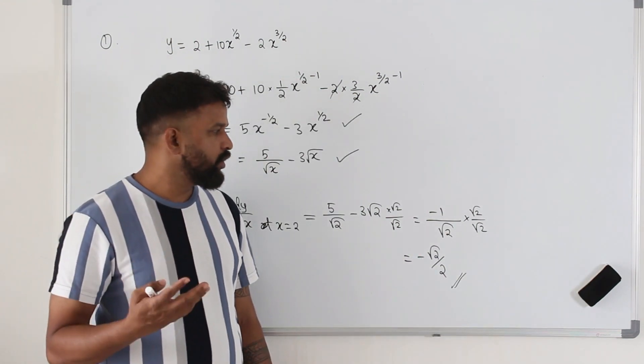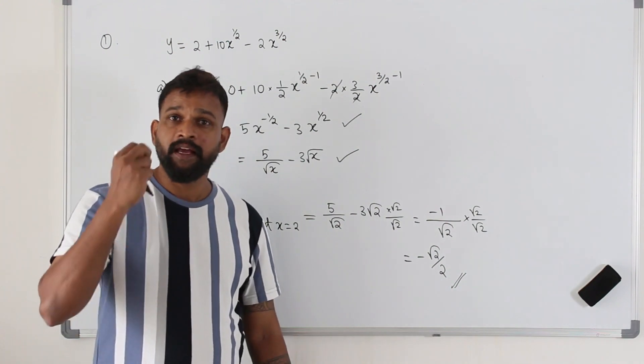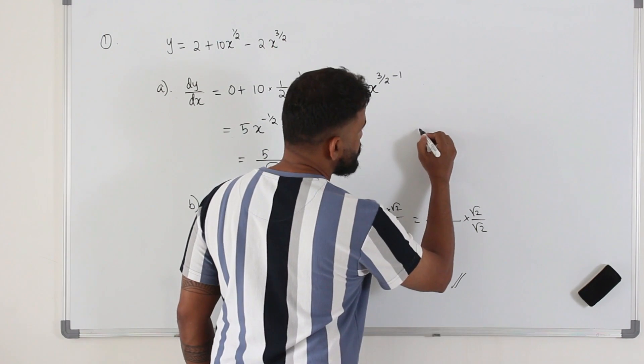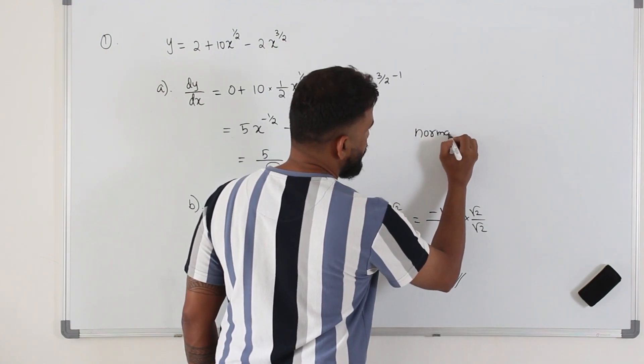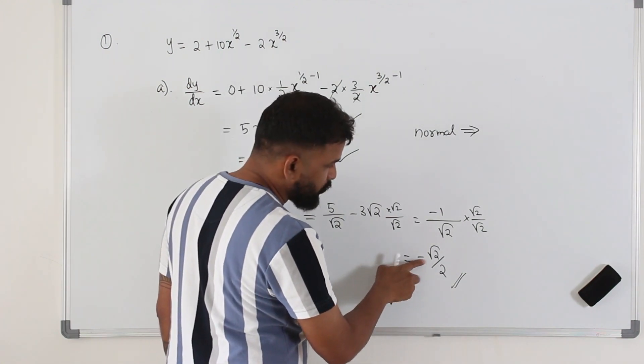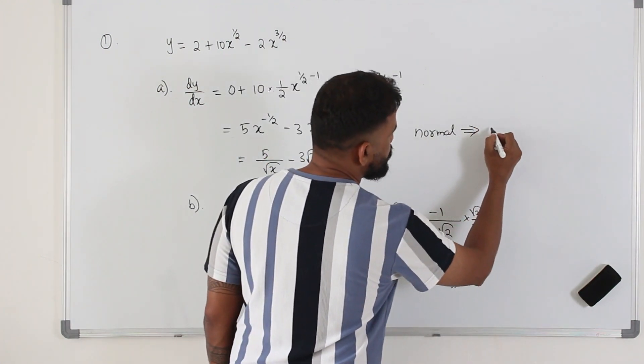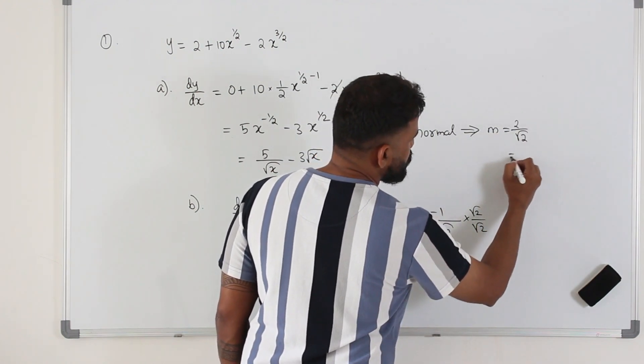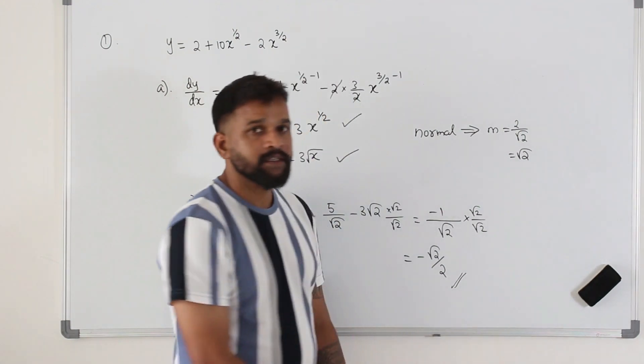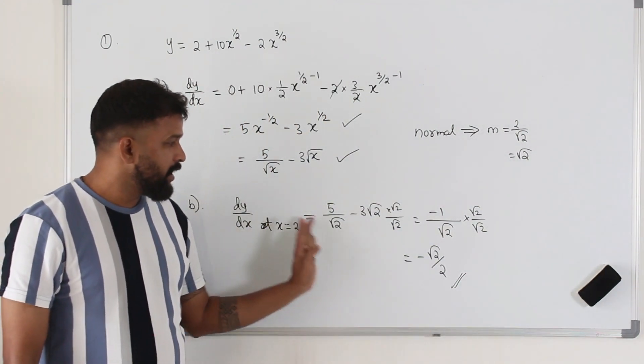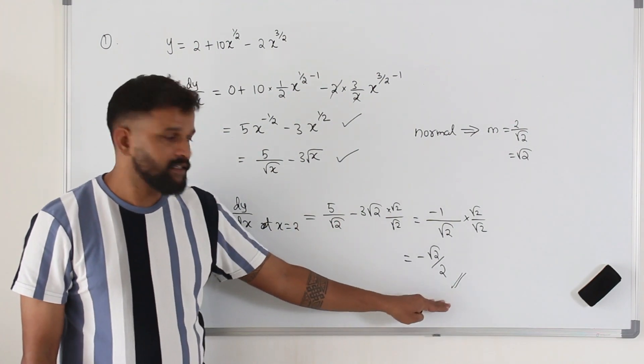But in case the question wants you to find the gradient of the normal, then take the negative reciprocal of this. So change the sign to positive and flip it. It's going to be 2 over root 2 which is just root 2. That's the slope of the normal. But in this question, they want you to find the gradient of the tangent. So this is the answer.